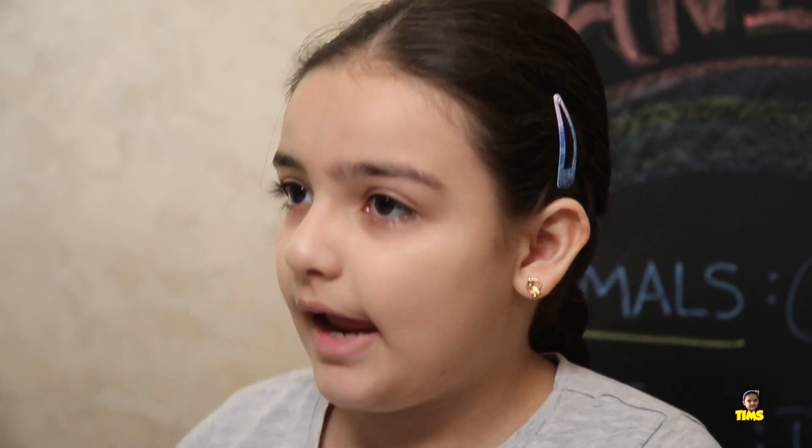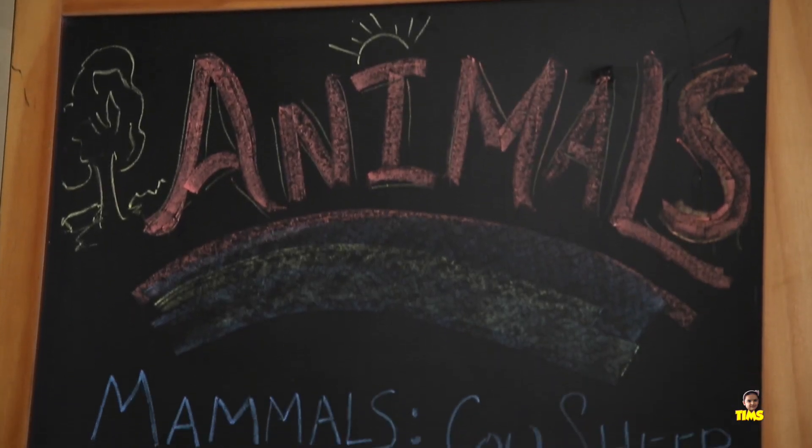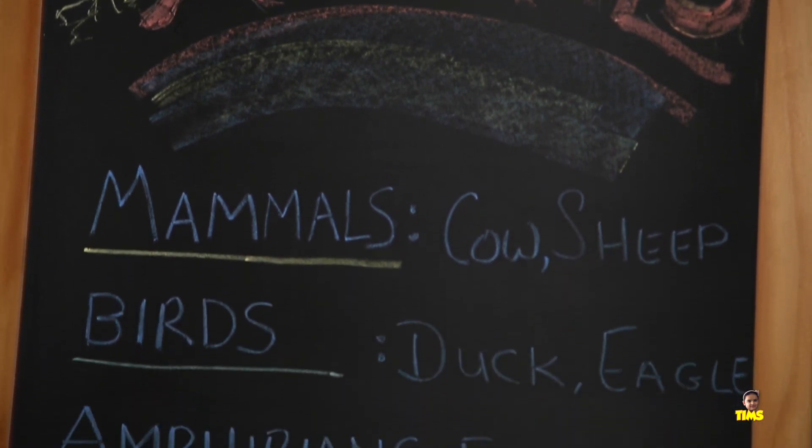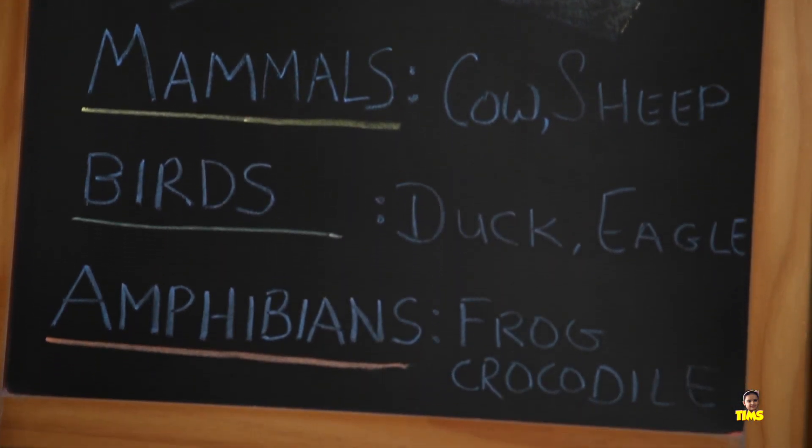Birds. Mammals give birth to their young ones but birds lay eggs and out of the egg hatches a baby bird. Birds are covered with feathers over their body. They have hollow bones rather than just normal bones like us, and that's how they fly with their wings. It's much more lighter. Let me give you some examples of birds.